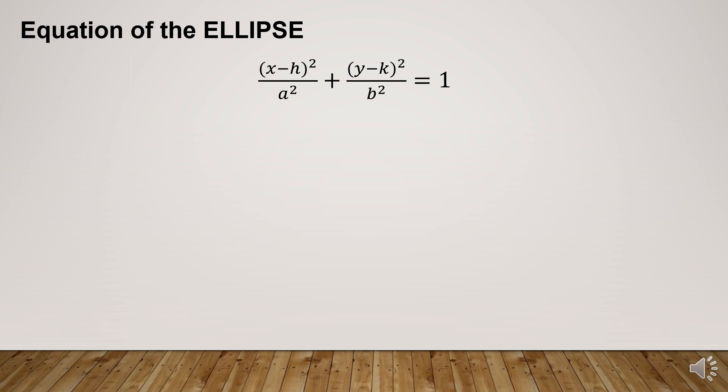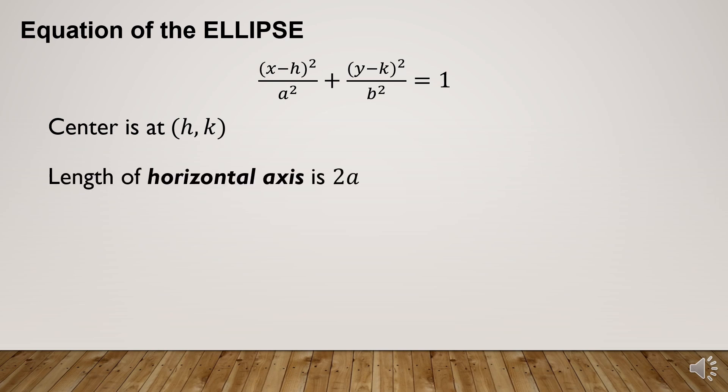The standard form of the ellipse equation is: (x minus h) squared over a squared plus (y minus k) squared over b squared equals 1. The denominator of the x term is a squared and the denominator of the y term is b squared. The center is at (h, k). The length of the horizontal axis is 2a, and the length of the vertical axis is 2b.